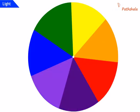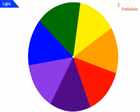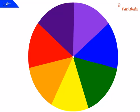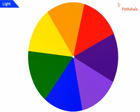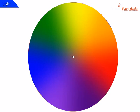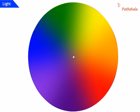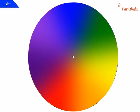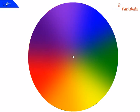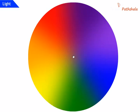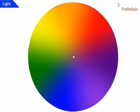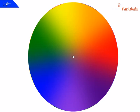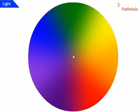When the disc is rotated fast, the colors get mixed together and the disc appears to be whitish in color. Such a disc is popularly known as Newton's disc. From this we can confirm that sunlight is white in color.